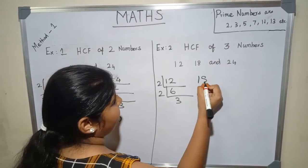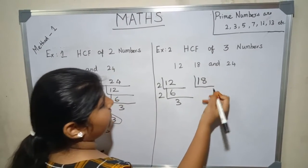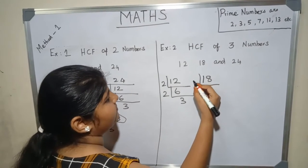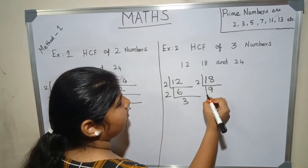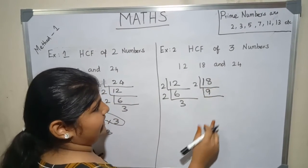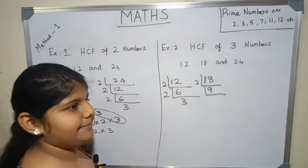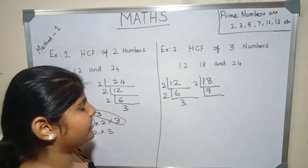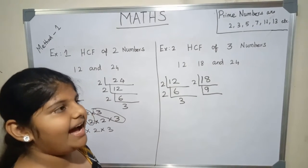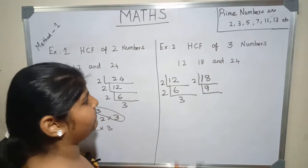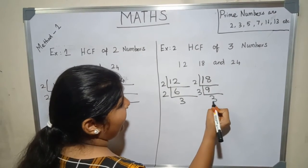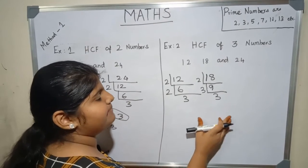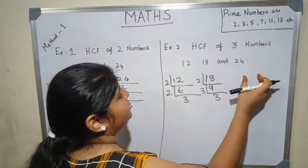Now for 18: 18 is an even number, so it is divisible by 2. 2 nines are 18. 9 is not divisible by 2, so we go to the next prime number, which is 3. Whether 9 is divisible by 3 — yes, it is. 3 threes are 9. We stop here because 3 is a prime number. Now let us take 24.